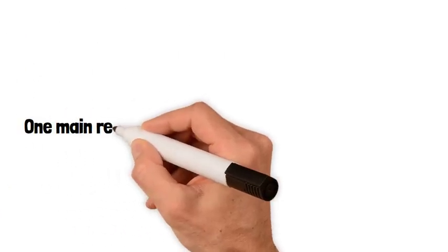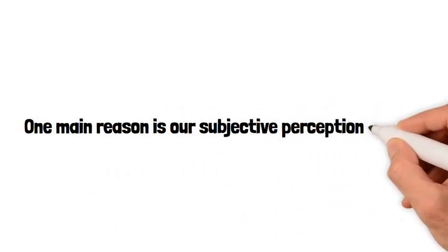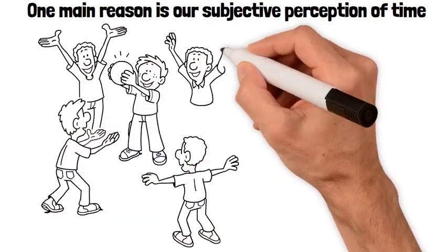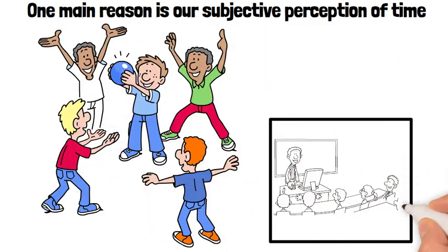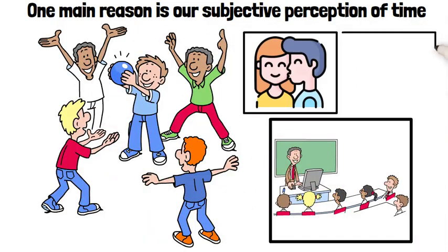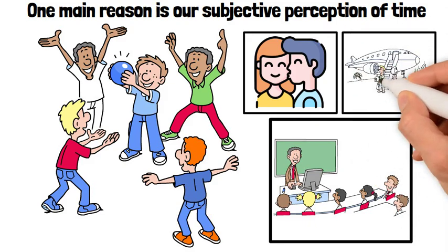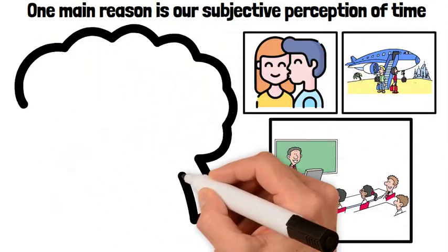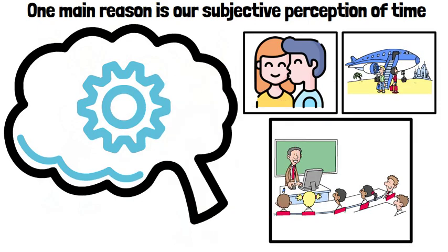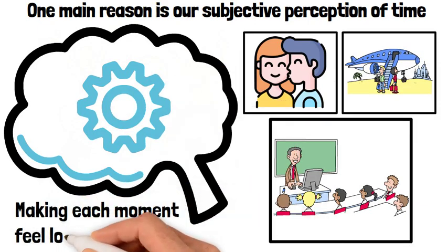One main reason is our subjective perception of time. When we're young, every experience is new. The first day of school, the first kiss, the first vacation without our parents. Our brains work hard to process and store these new experiences, making each moment feel long and intense.